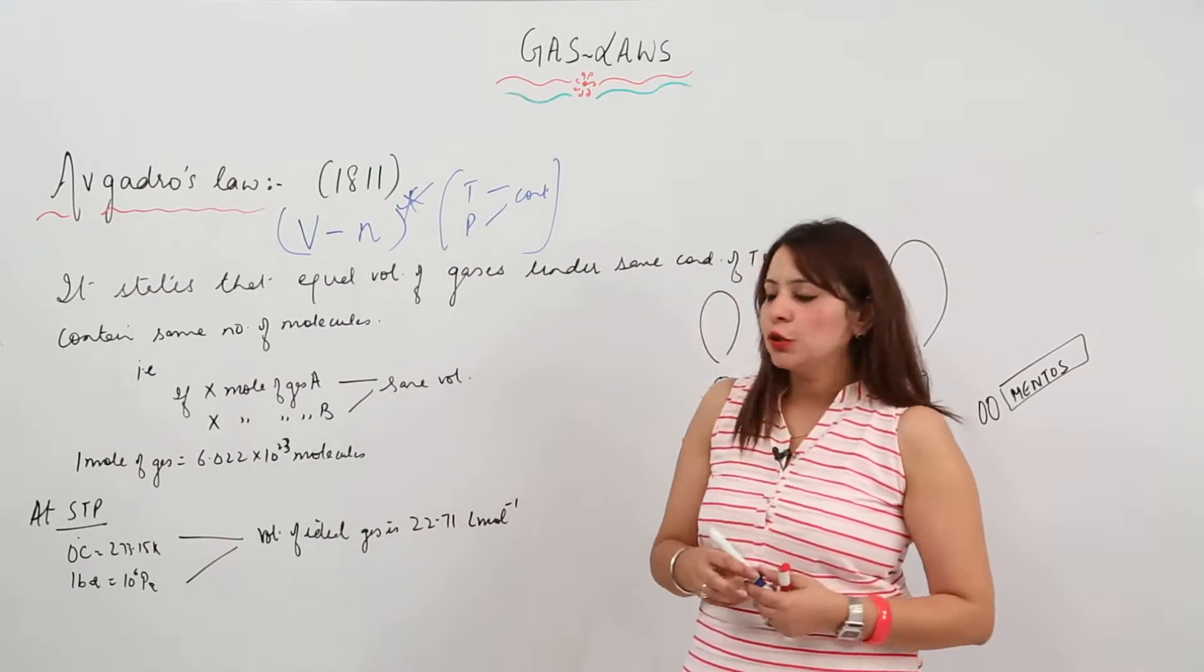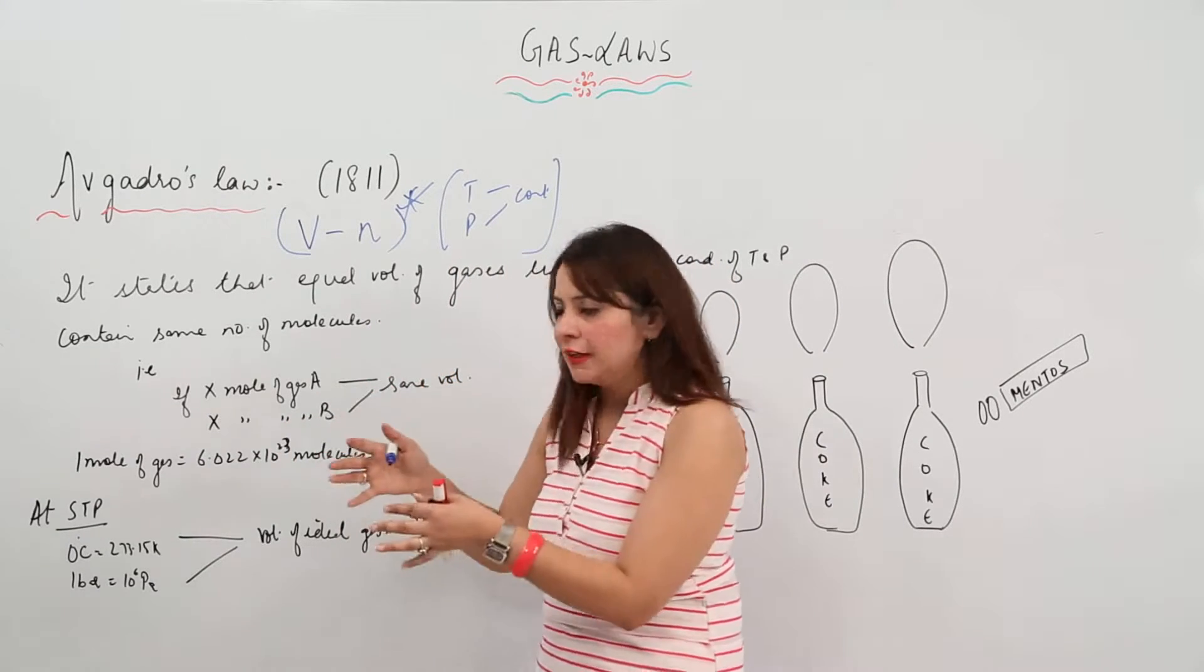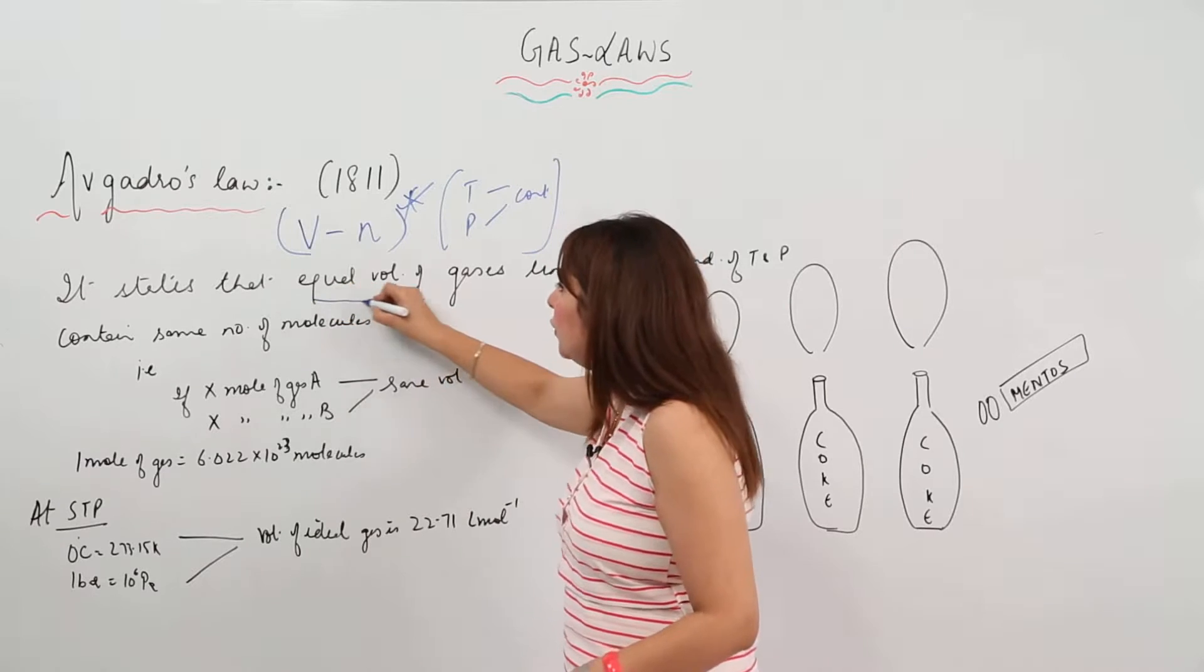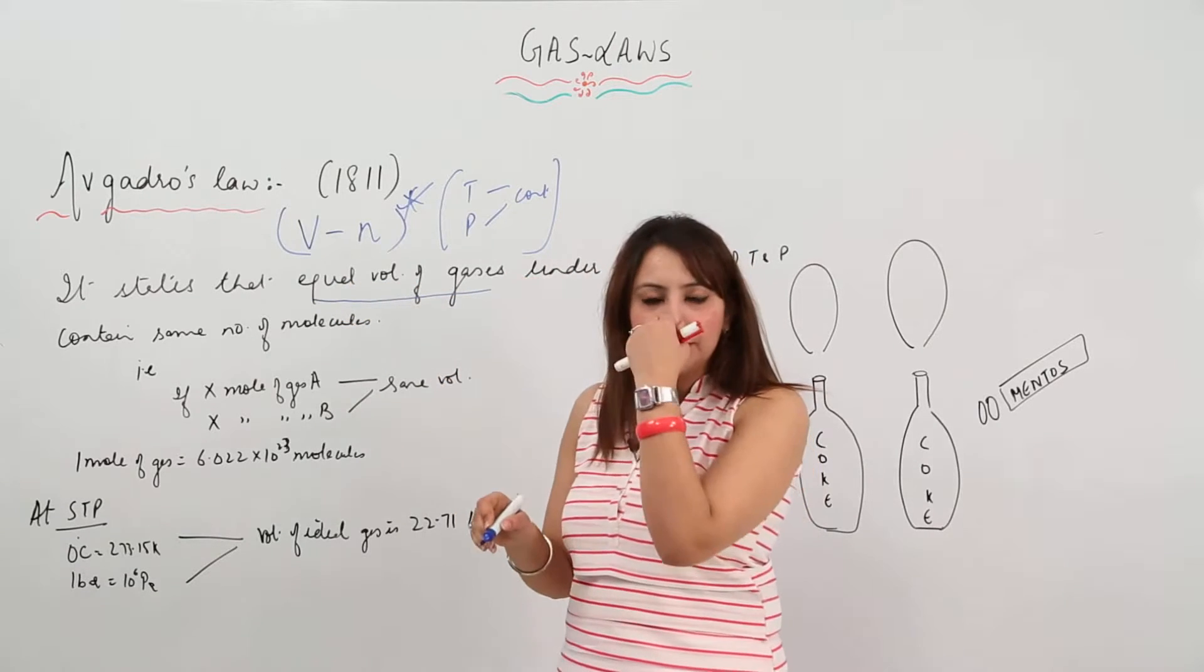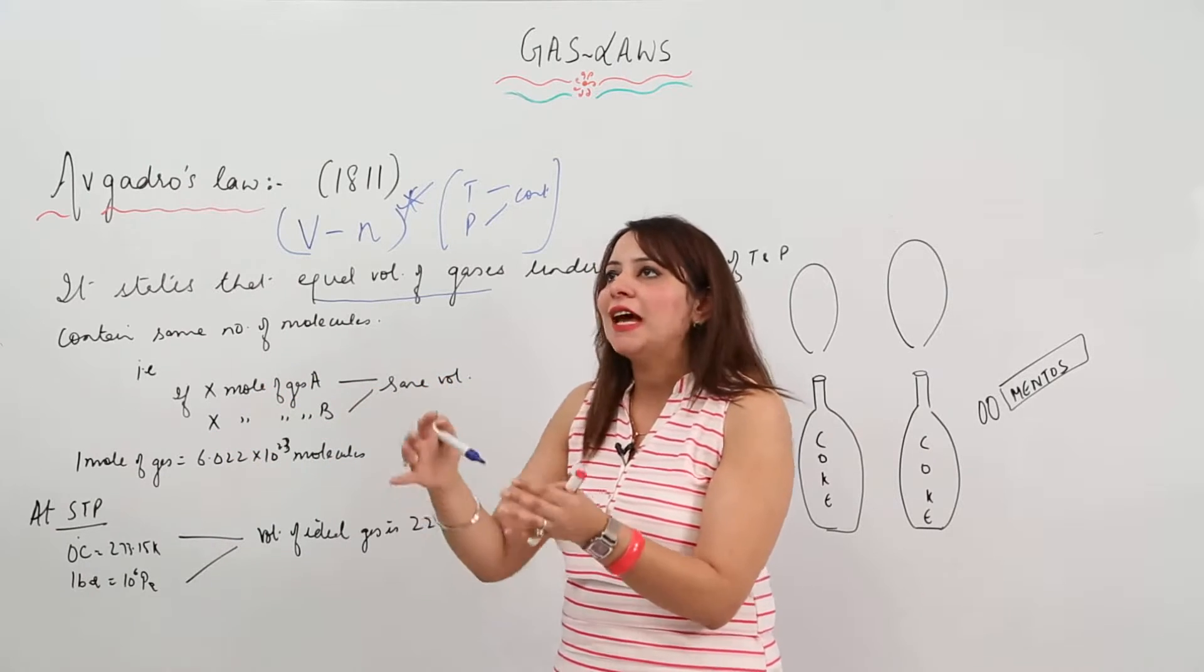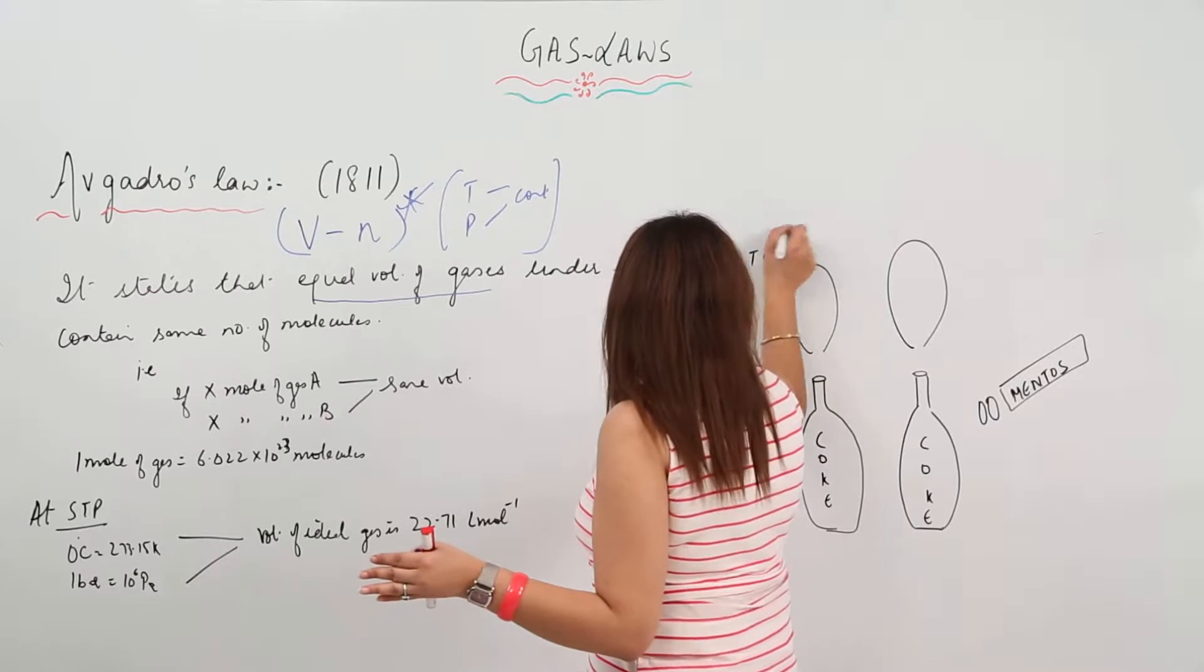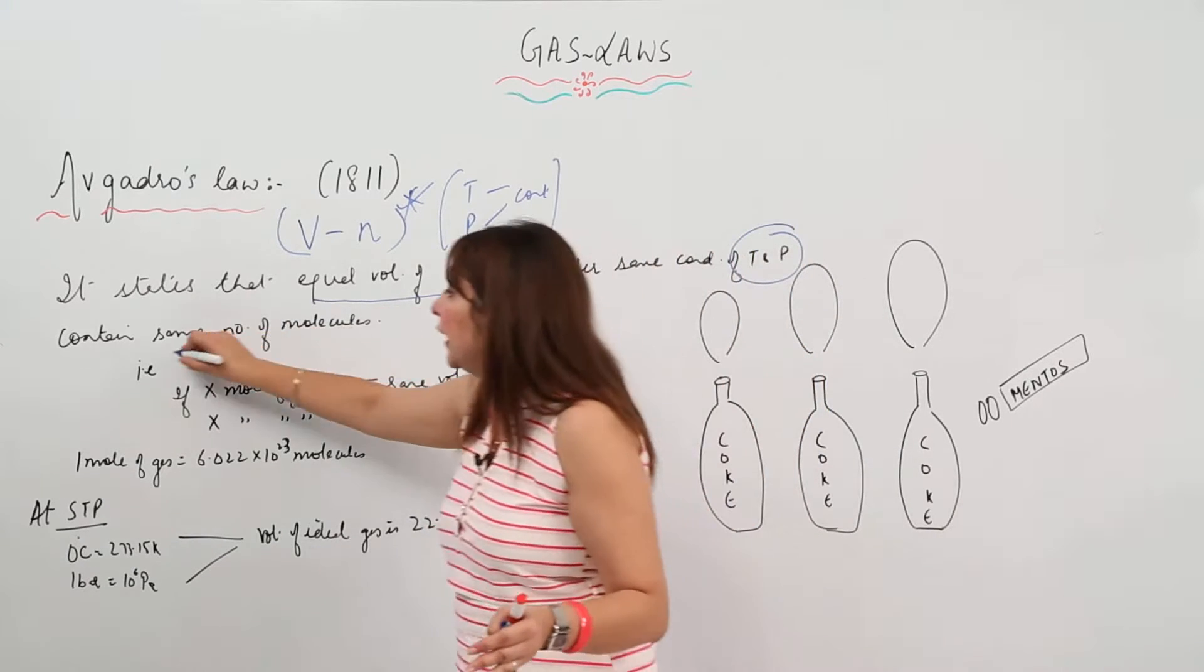What does it state? First, I'll read the statement. It states that equal volumes of gases - that means if gas A and gas B have the same volume V at the same conditions of temperature and pressure - they will contain the same number of molecules.